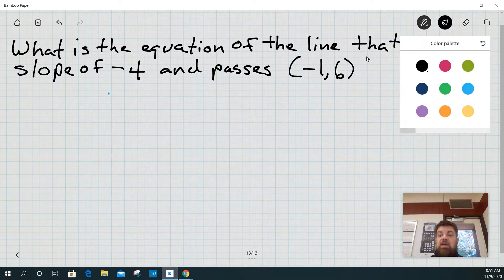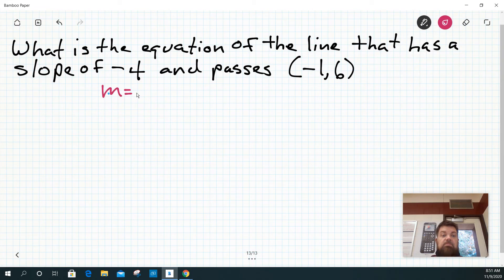So now, to write this equation, I need to know that this is m. This is the slope, negative 4, okay? This is x sub 1, y sub 1.